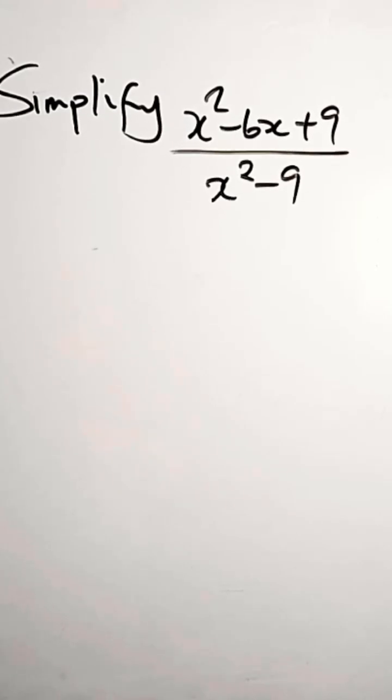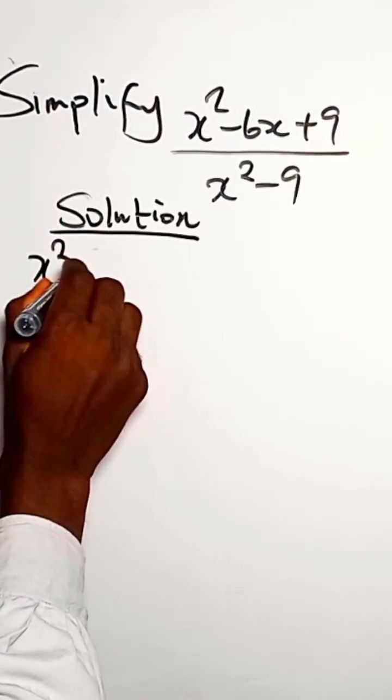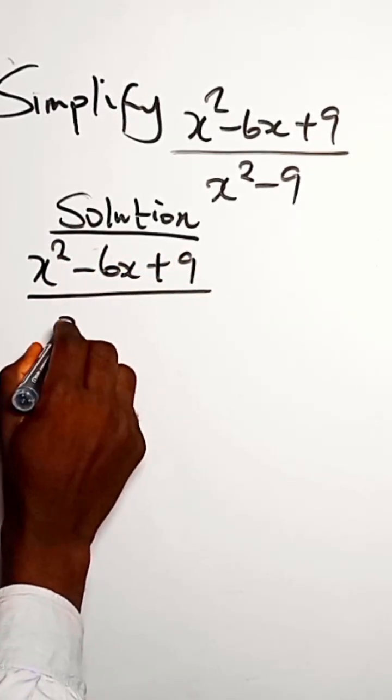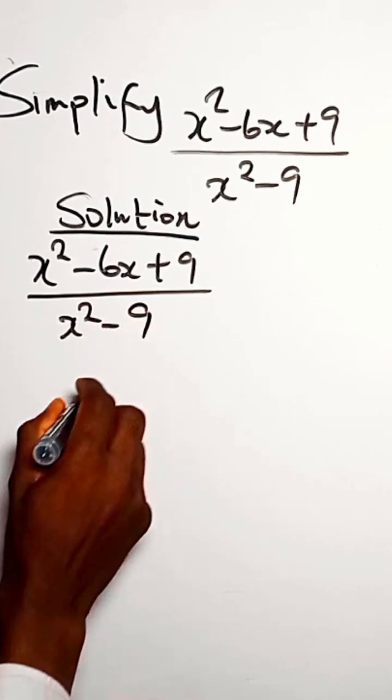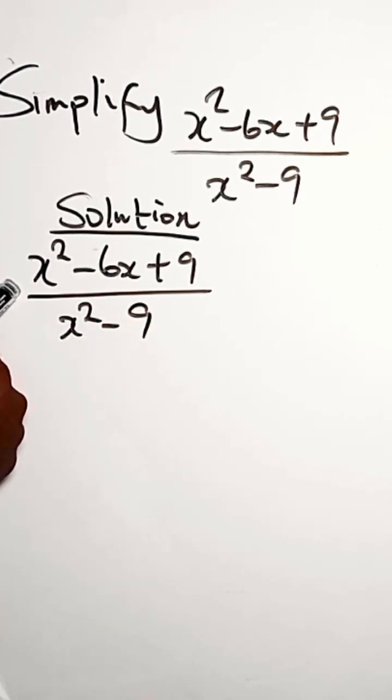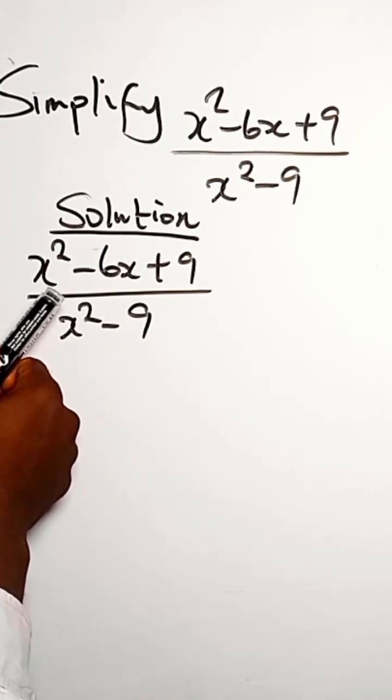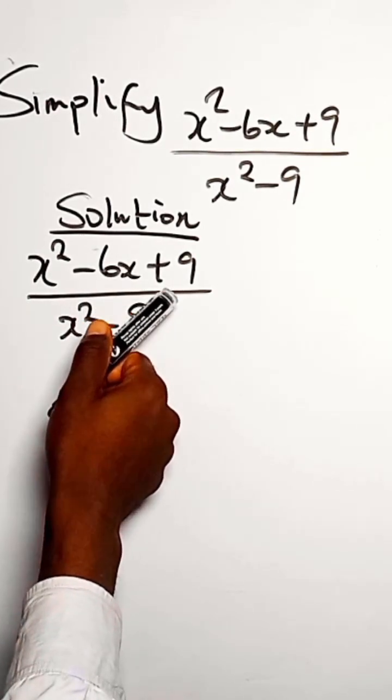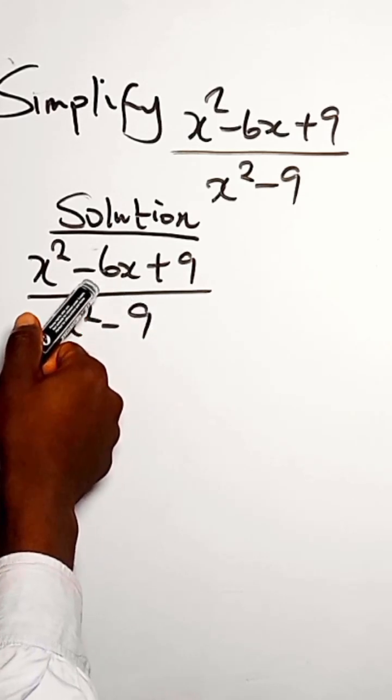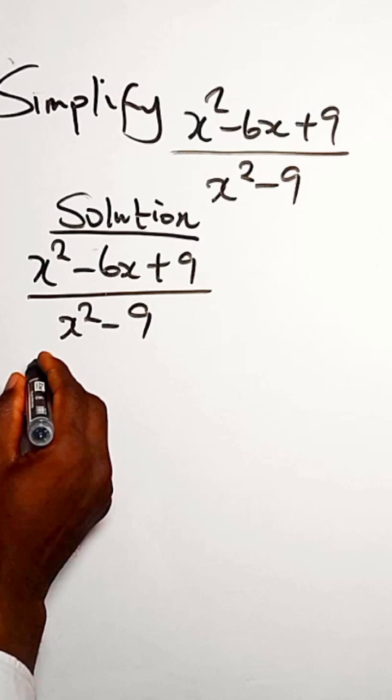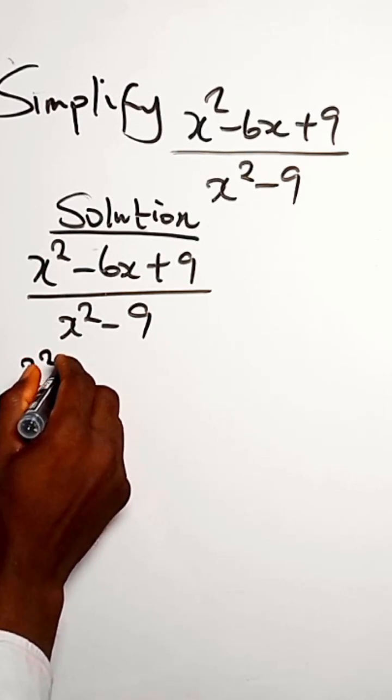Simplify this rational expression: x squared minus 6x plus 9 divided by x squared minus 9. So we look at the numerator. We can factorize this. We look for the product of two factors and the sum of the same factors that will give us this.